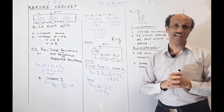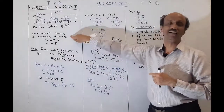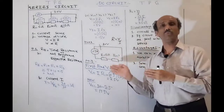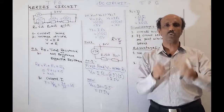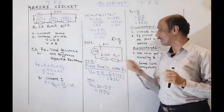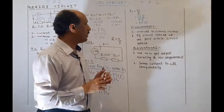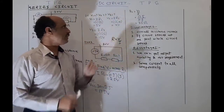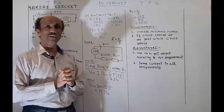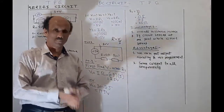The voltage drop across R1 is 2.5 volt. We subtract this from the source voltage to find V2: source voltage minus 2.5 V gives 7.5 volt across R2. Now we calculate R2 = V2 / I = 17.5 / 0.5 = 35 ohm. The unknown resistance R2 is 35 ohm.